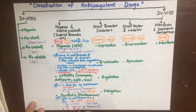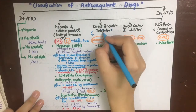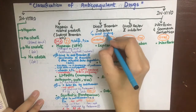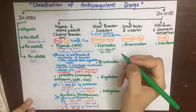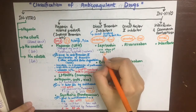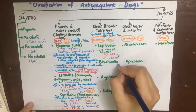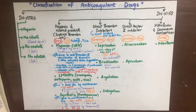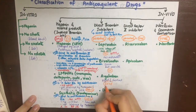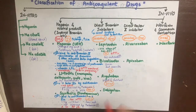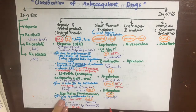Coming to the direct thrombin inhibitors: as is evident from their name, they directly bind to thrombin and directly inhibit it, without binding to antithrombin. Lepirudin is used in cases of heparin-induced thrombocytopenia, is given IV, APTT monitoring is required, and there is no antidote in cases of overdose. Bivalirudin is similar to lepirudin but reversible, and is also given IV. Argatroban is rapid and short-acting, given as IV infusion, can cause HIT, and APTT monitoring is required. Dabigatran is given orally, causes reversible inhibition of thrombin, and no monitoring is required.